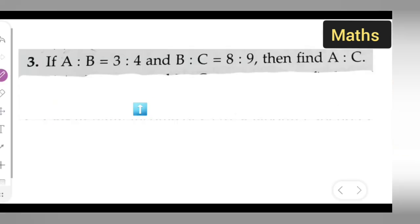So first take down this question. This is question number 3. You can take down: if A ratio B is equal to 3 ratio 4, and B ratio C is equal to 8 ratio 9, then find A ratio C.